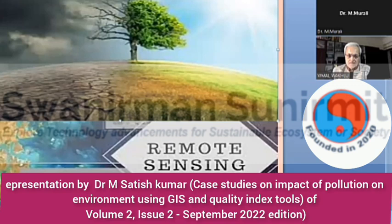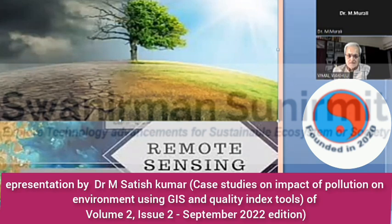Satellite-based remote sensing provides a suitable alternative for timely, accurate, and synoptic estimation of various crop parameters and crop health. Just as hemoglobin is a parameter for assessing human health, chlorophyll concentration is the key parameter for estimating the health of crops. The amount of chlorophyll — and therefore crop health — can be estimated directly from satellite images, enabling us to monitor the health of crops across large areas.